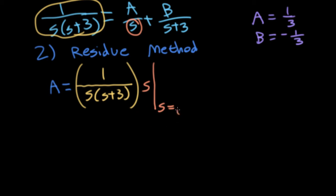We'll also see that this also goes by the name of a pole. Okay, so the main thing that happens here is this s cancels with this s, and I'm left with one over s plus three evaluated at s equals zero, which gives me one over three.